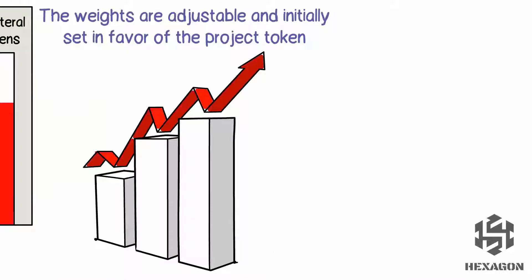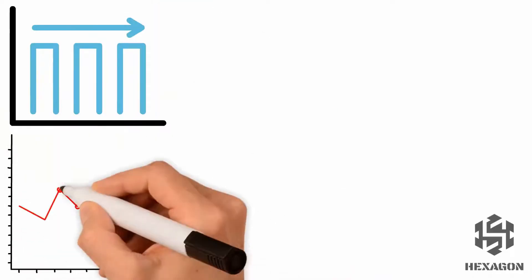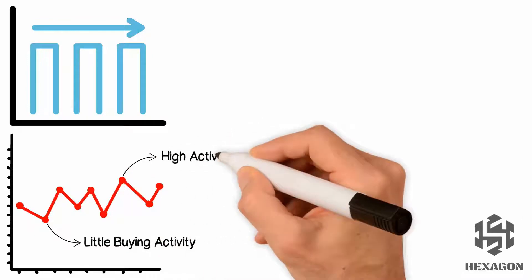The token sale is calibrated to keep the price stable, but drops in price during little buying activity and spikes in price during high activity can be expected.